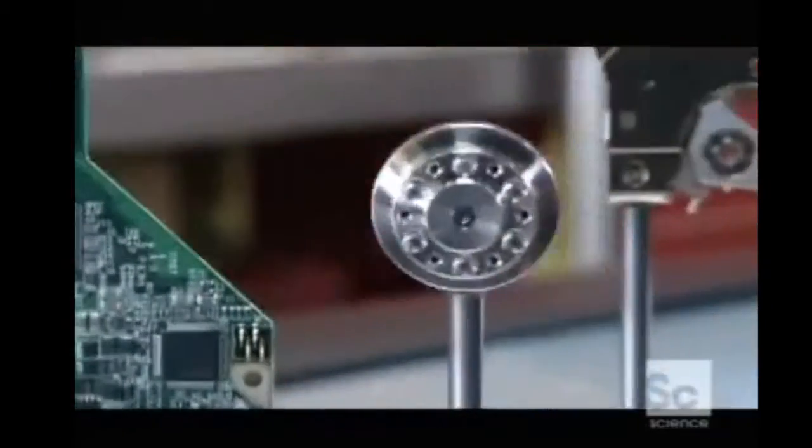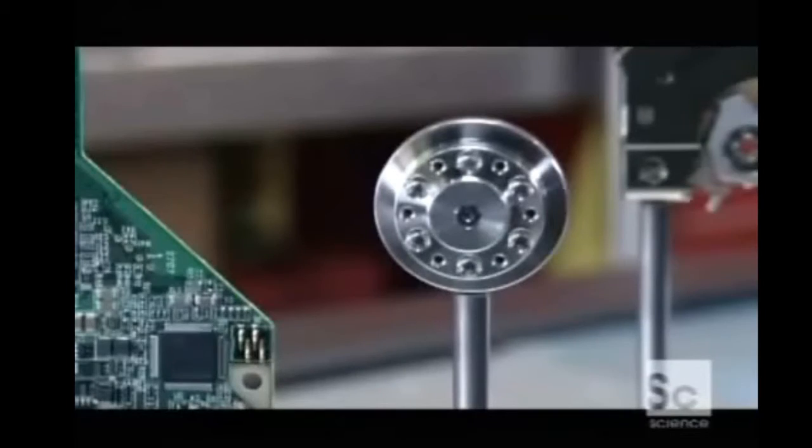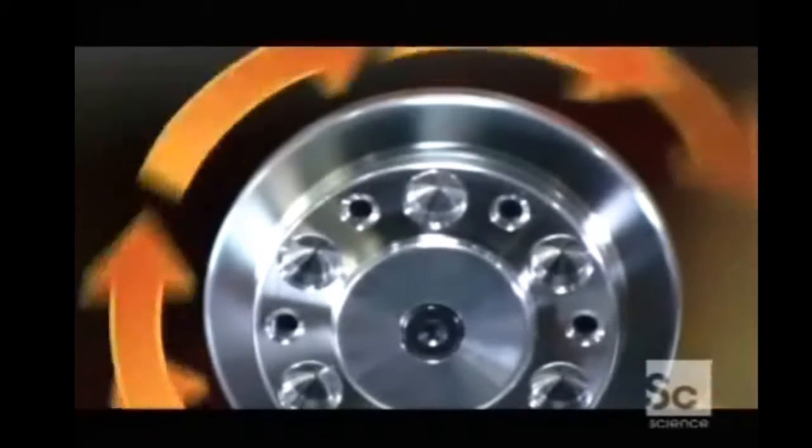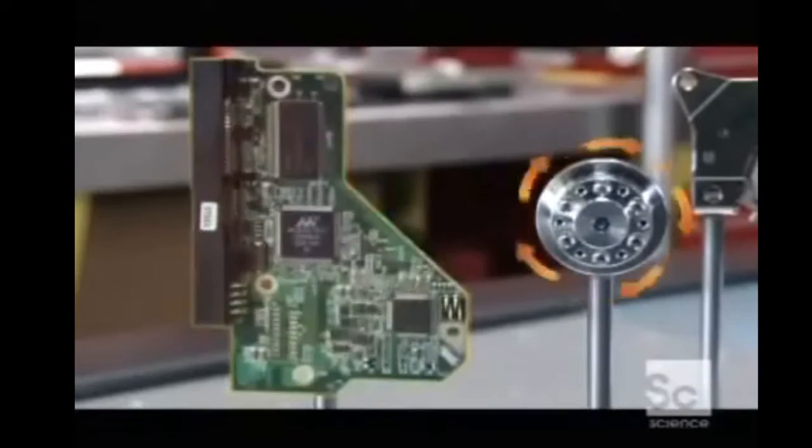An electric motor spins the hard drive's disk at exactly 7,200 revolutions per minute. The circuit board keeps the speed constant.